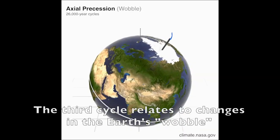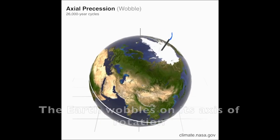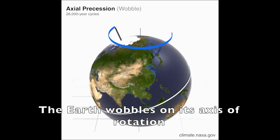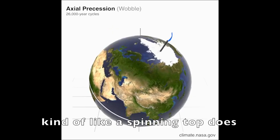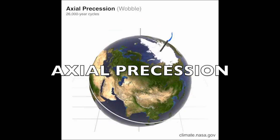The third cycle relates to the changes in the Earth's wobble. The Earth wobbles on its axis of rotation, kind of like a spinning top does. We call this axial precession.